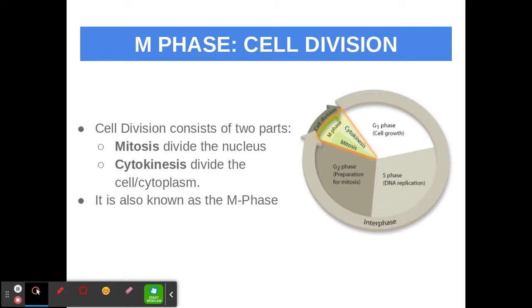The next part of the cell cycle is the M phase, where the cell actually divides. The M phase has two parts: mitosis, where we divide the nucleus, and cytokinesis, where we divide the rest of the cell — the cytoplasm. So cell division means dividing the nucleus first, then the rest of the cell.